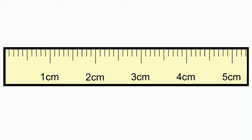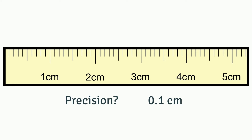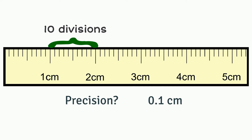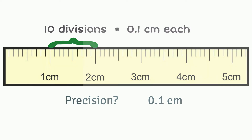Now here's another example. What is the precision of this ruler? If you answered 0.1 cm, that is correct, because there are 10 divisions between 1 cm and 2 cm, wherein each is equivalent to 0.1 cm.